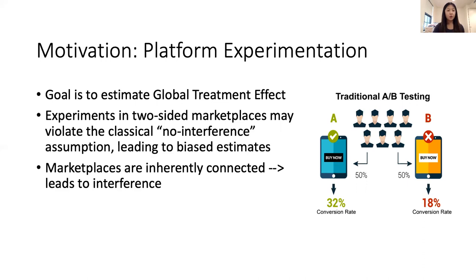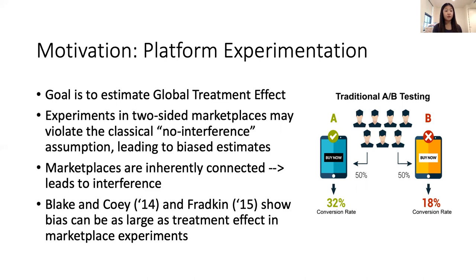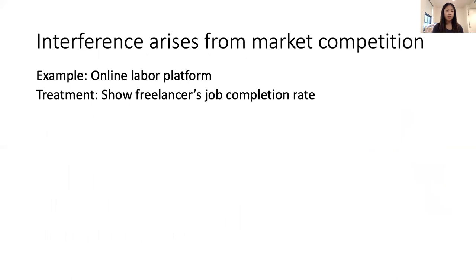You can see why this assumption might be violated on a marketplace. Marketplaces are inherently connected — people are buying from each other and competing with each other, and this leads to interference across users. Previous work has already shown that this interference does create a bias in experiments, and this bias can actually be as large as the treatment effect itself. In other words, this is a very large problem for people trying to implement an experiment.